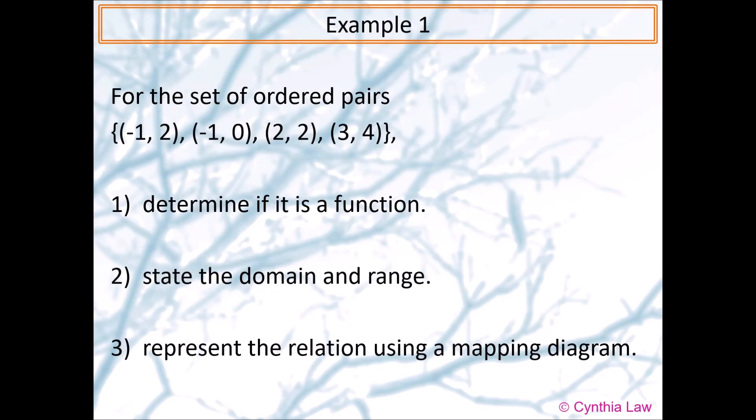Let's look at an example. For the set of ordered pairs {(-1, 2), (-1, 0), (2, 2), (3, 4)}, determine if it is a function, state the domain and range, and represent the relation using a mapping diagram.